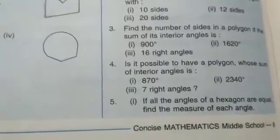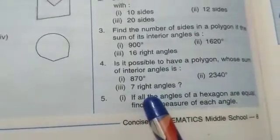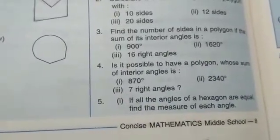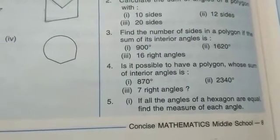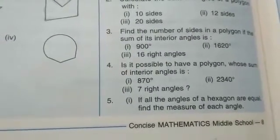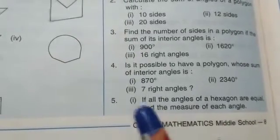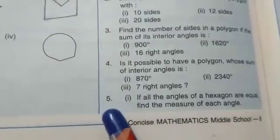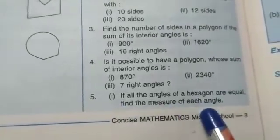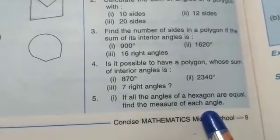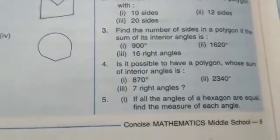Similarly, children, you can do the remaining subparts of question 4 yourself. Find the value of n, and if n is a whole number greater than 2, then a polygon is possible. Now move to question number 5, subpart 1: if all the angles of a hexagon are equal, find the measure of each angle.